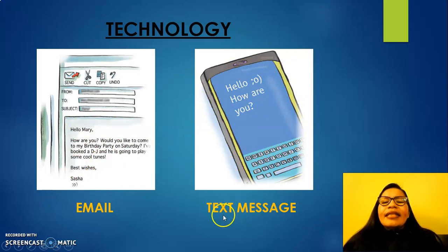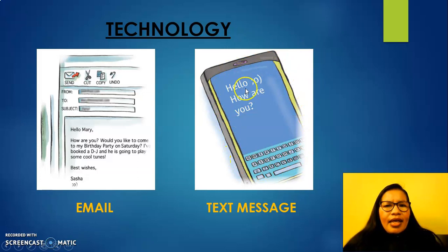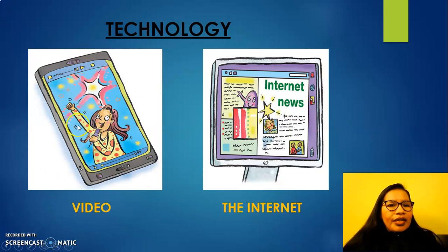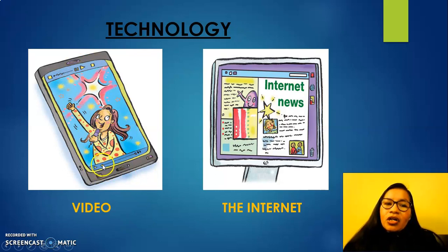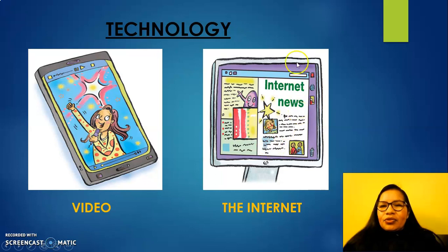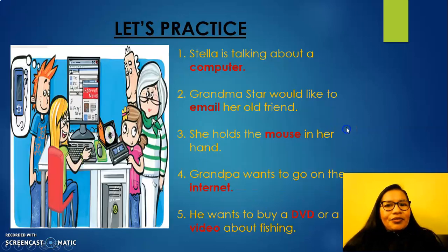Another vocabulary: Text message. Look at the mobile phone and look at this — 'Hello, how are you.' Text message. Very good. Let's continue. Video — you can play this video and you can see it. Another vocabulary: The internet. This is the screen, part of your computer, and you can also check the internet. Let's continue.